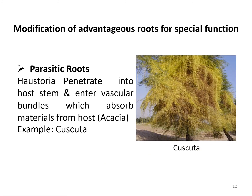Another type of adventitious roots are parasitic roots, also called sucking roots. Parasitic plants have modified roots called haustoria, which penetrate into the host stem and enter its vascular bundles to absorb minerals. They have no connection with soil. For example, Cuscuta has a non-green stem and scale leaves; it sends haustoria into the host, which is the acacia plant.